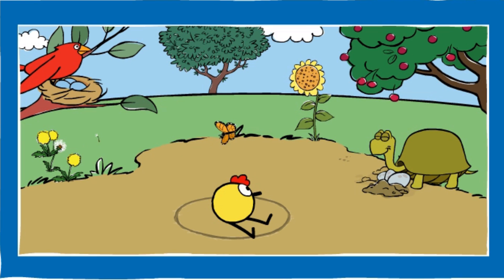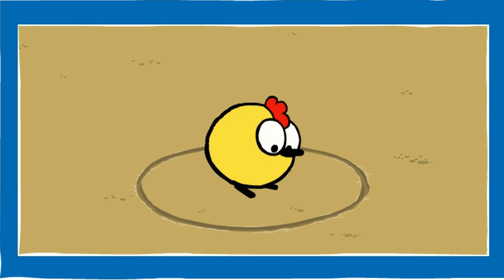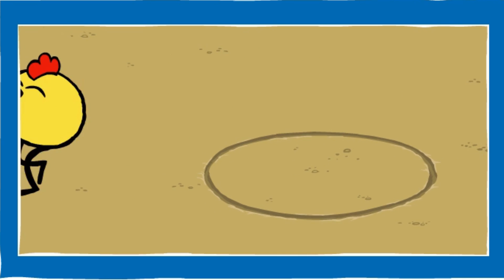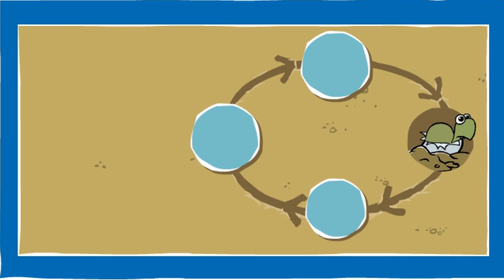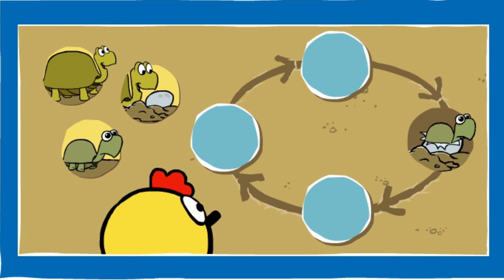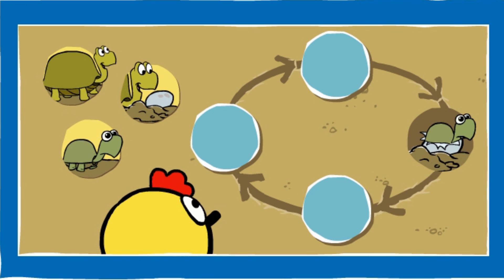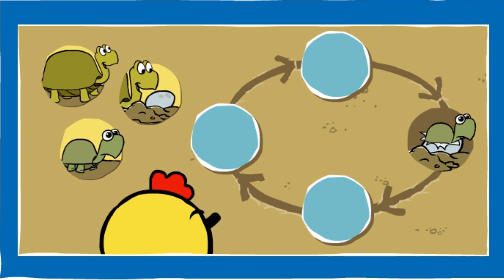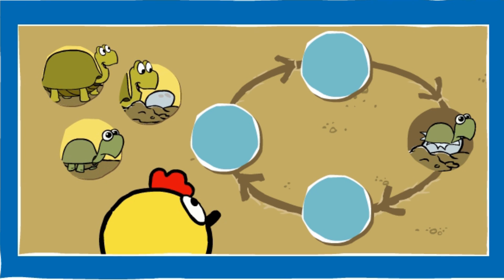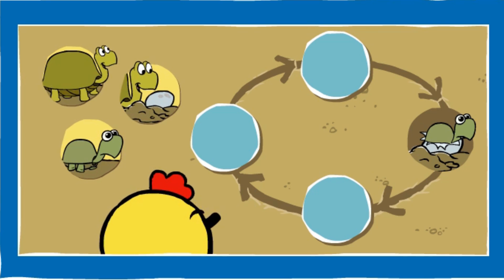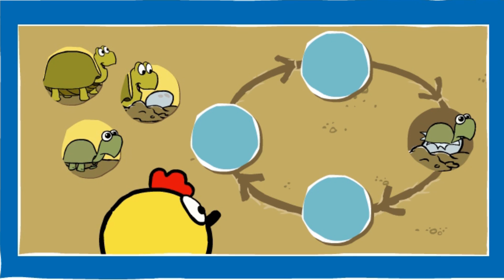Turtle! Let's look at turtles. They come from eggs just like birds. Help Peep put things in the right order. Drag the pictures onto the spots in the circle where you think they go. Think about what happens first and what happens next.